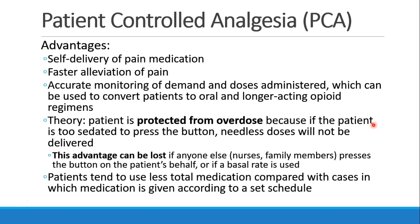The advantages of PCA are that the patient can self-deliver their own pain medication and get faster relief of their pain. Since the pump keeps track of everything, you can accurately monitor their demand and the doses they received, and use that information when it's time to convert the patient to an oral or other longer-acting opioid regimen. The theory is that the patient is protected from overdose because if the patient is too sedated to press the button, needless doses won't be delivered. But this advantage is lost if anybody else, like a nurse or a family member, pushes the button on the patient's behalf. Also, if a basal rate is being used, the patient is receiving opioid continuously, even if they're sedated.